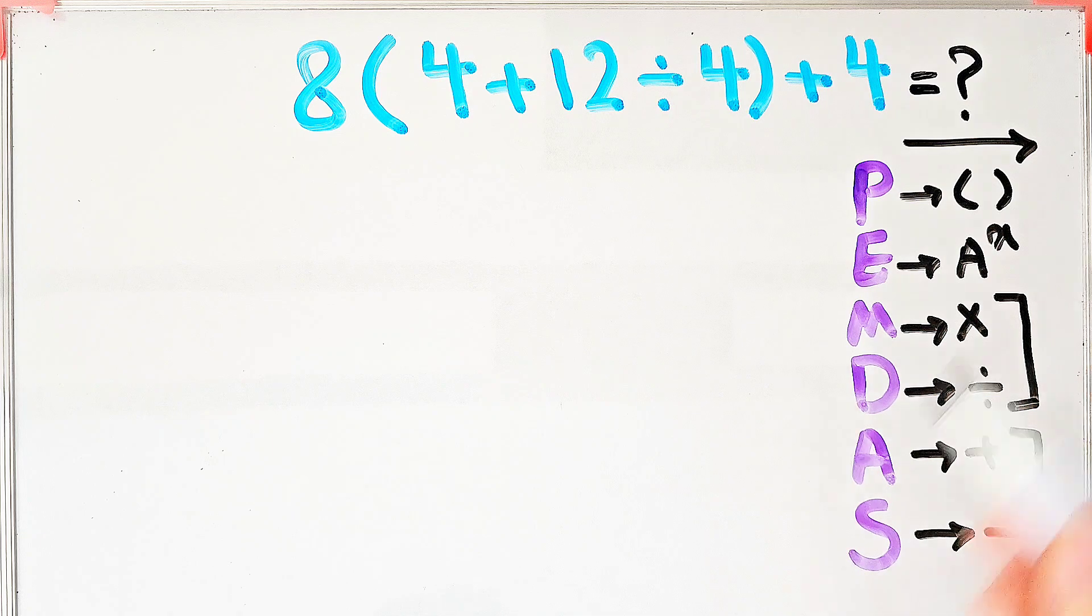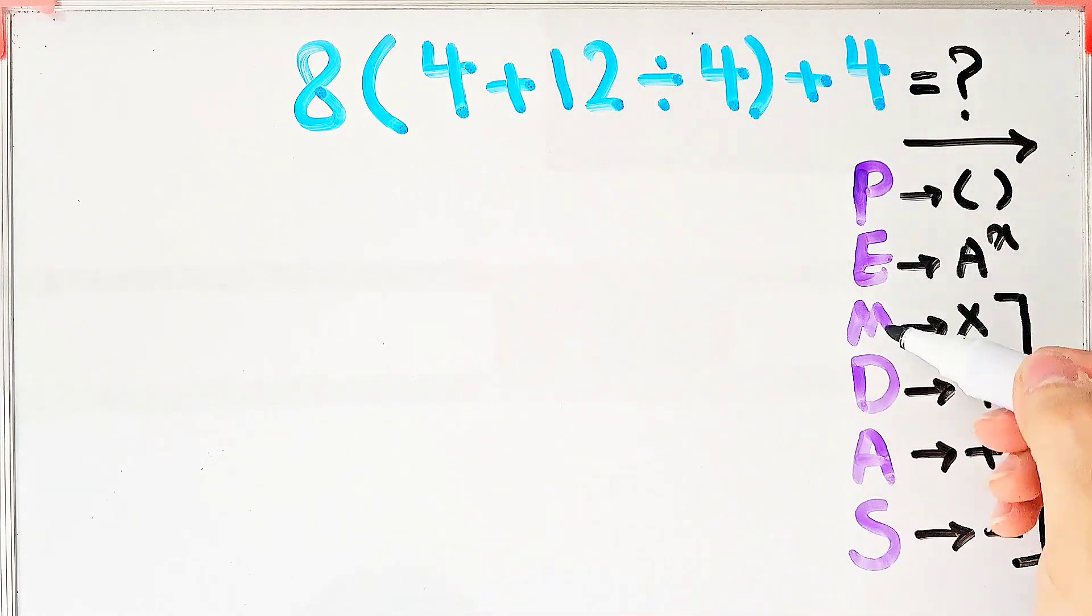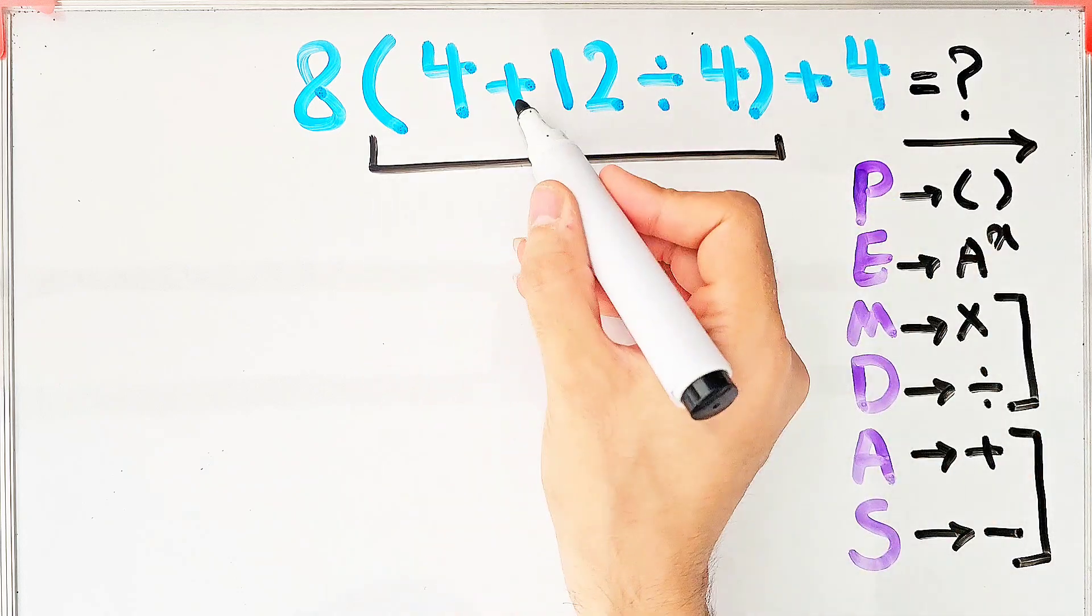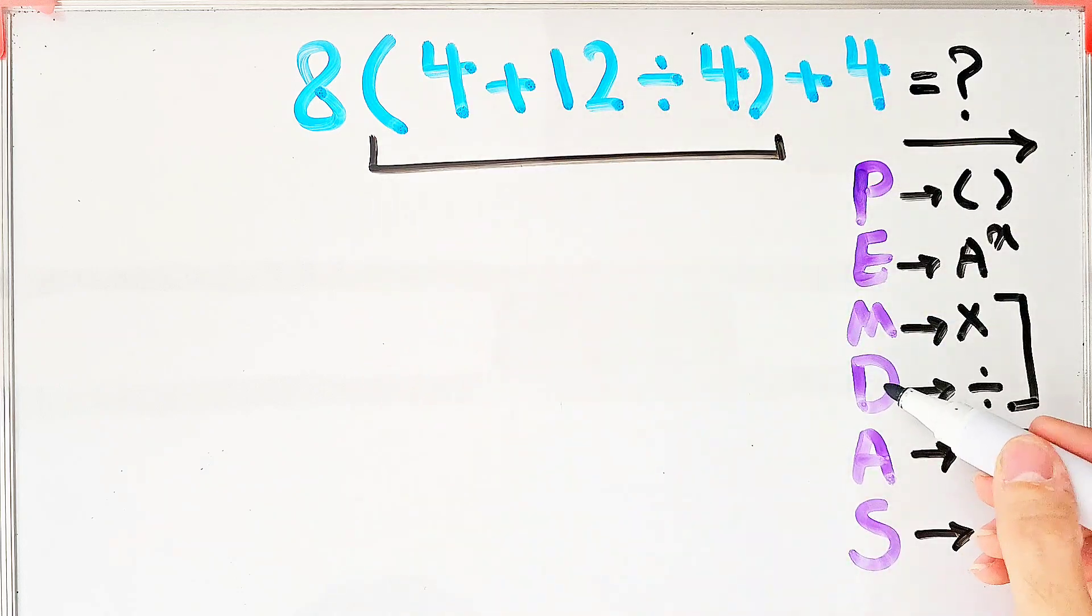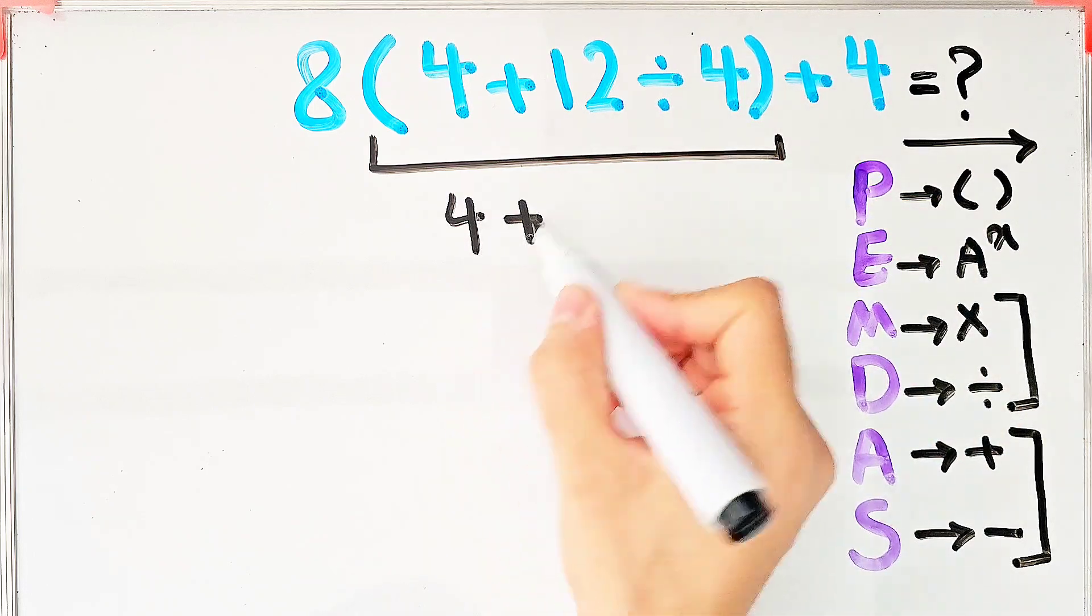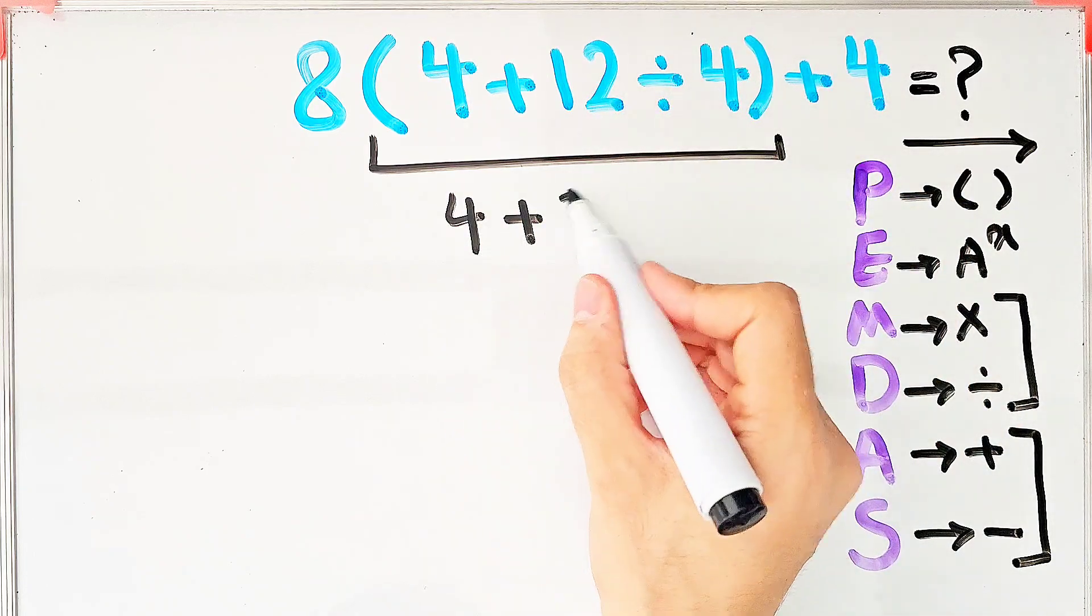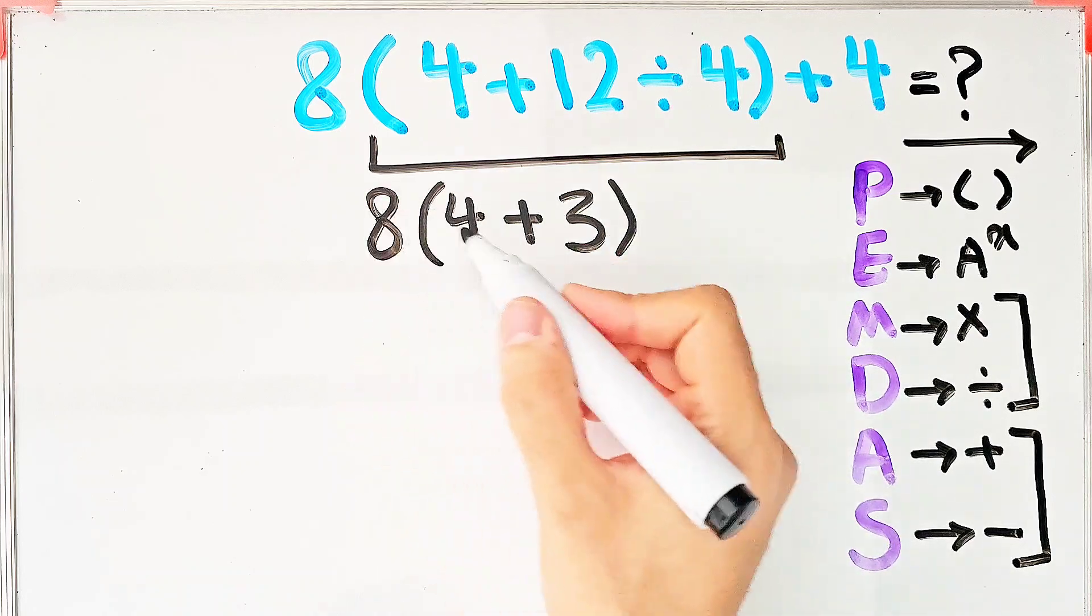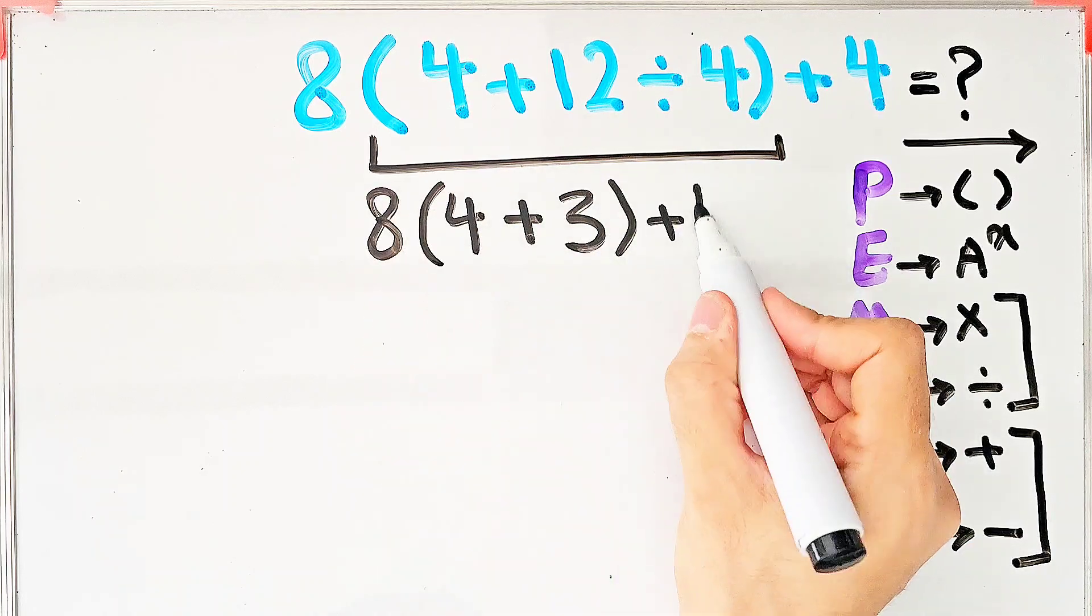According to the PEMDAS rule, first we simplify the parenthesis. Inside the parenthesis, we have addition and division. First, we do this division because division has higher priority than addition. We have four plus twelve divided by four, that equals three inside the parenthesis. And the question is eight times four plus three, then plus four.